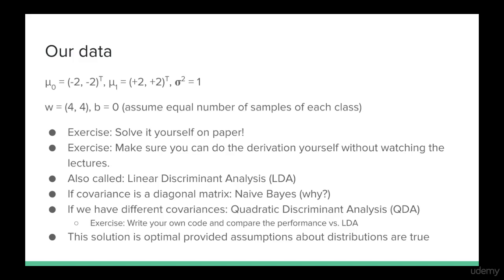If we have different covariances, note that the quadratic terms would no longer cancel out. As an exercise, you might want to try deriving this quadratic solution yourself also. This is called quadratic discriminant analysis, or QDA. Also try writing your own code for QDA and comparing its performance against LDA.